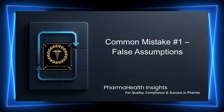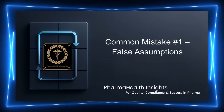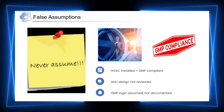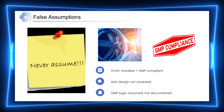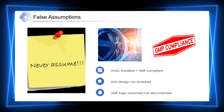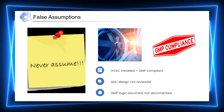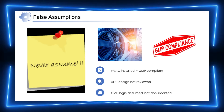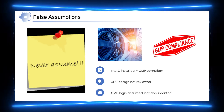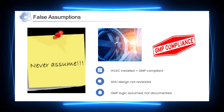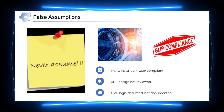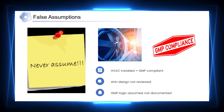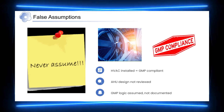Let's now look at common mistakes that repeatedly appear across plants. One of the most common mistakes is the assumption that installing HVAC automatically ensures GMP compliance. Once the system is commissioned, teams often feel that compliance is achieved and further review is not required. However, GMP does not work on assumptions. It requires that controls are intentionally designed, clearly justified, and consistently demonstrated. When AHU design philosophy and control logic are not properly reviewed and documented, this assumption often leads to audit observations.